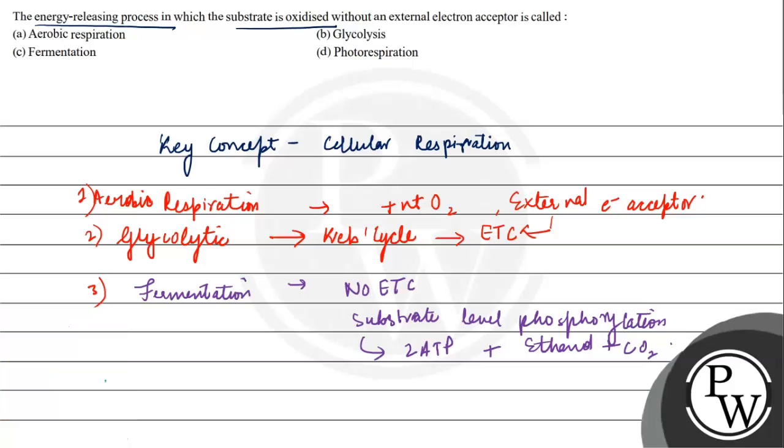The fourth one is photorespiration. It is a wasteful process and takes place when there is high temperature during which RuBisCO, which is an enzyme, the most abundant enzyme, absorbs the oxygen and gives out CO2.